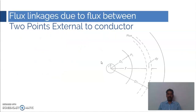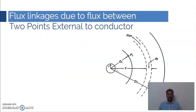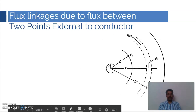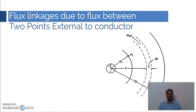Let us consider a conductor whose radius is R. In order to calculate the flux linked with this conductor due to flux outside the conductor, let us consider two points: P1 located at D1 meters from the conductor, and P2 which is D2 meters away from the center of the conductor. We will calculate the flux linkage between P1 and P2.